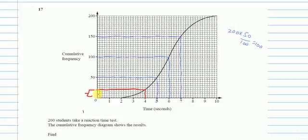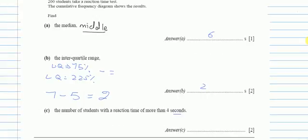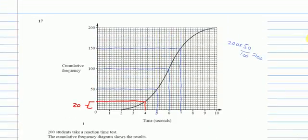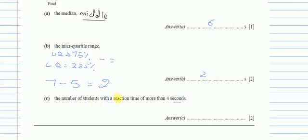So every one grid is 5. So this is 5, this is 10, this is 15, this is 20. So 20 students out of 200 took less than 4 seconds or exactly 4 seconds but they are asking for more than 4 seconds. So out of 200, 20 took less, the other 180 took more. So I can say 200 minus 20. So it will be 180.